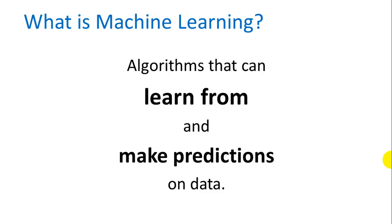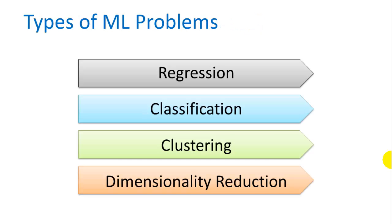Machine learning basically is algorithms that can learn from and make predictions on data. Types of machine learning problems, you have regression, classification, clustering, and dimensionality reduction are four common machine learning problems, and let me explain what each one of these is.